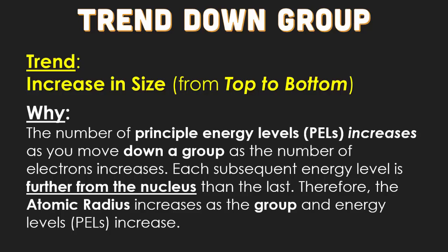The trend as you go down the group is that the size will get bigger. The number of principal energy levels increases as you go down a group as the number of electrons increases. Each subsequent energy level is further from the nucleus than the last. Therefore, the atomic radius increases as the group and energy levels increase.